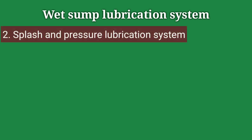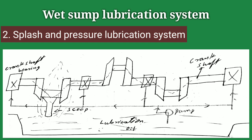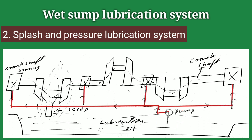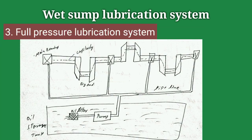We can modify the splash lubrication system because the splash lubrication system will fail when we have high load on the bearing, as the amount of lubricating oil is not sufficient for the bearing at high load. So in this case we also use a pressurized pump which supplies the lubricating oil to the individual bearings. This is the modified splash, or splash and pressure lubrication system. The full pressure lubrication system uses a pressurized pump to supply lubricating oil to the various moving parts of an engine.